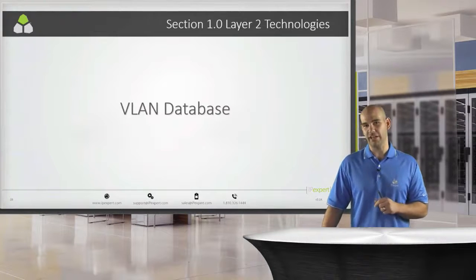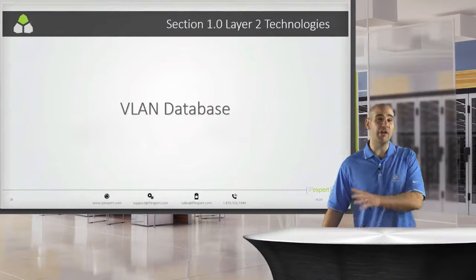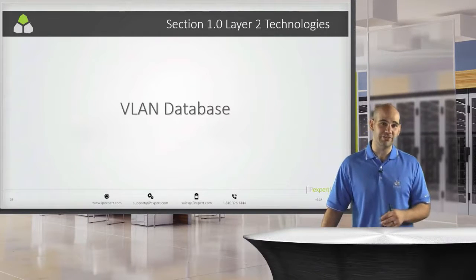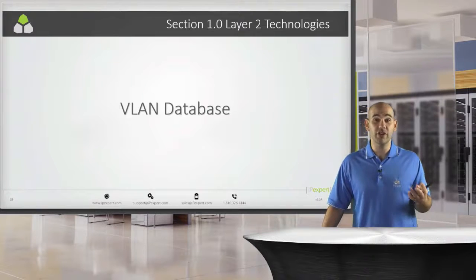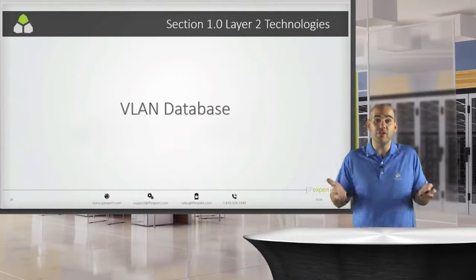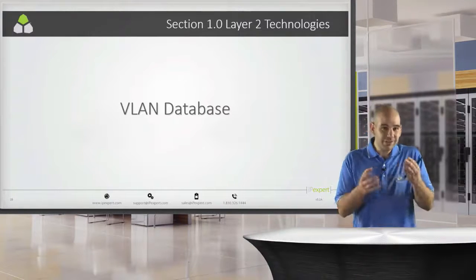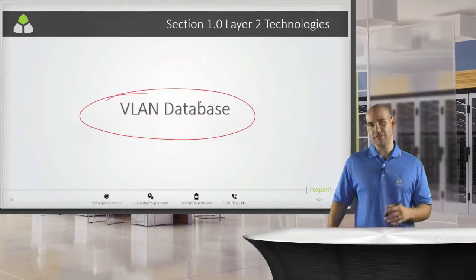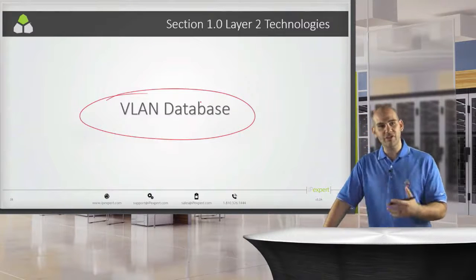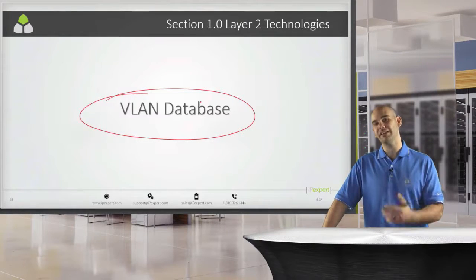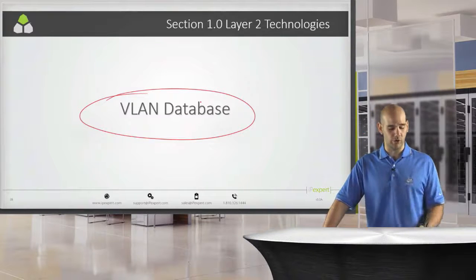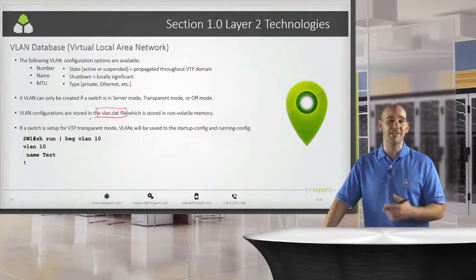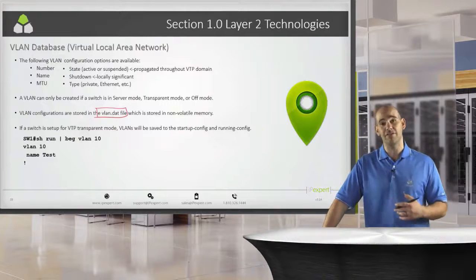Let's take a moment to talk about our VLAN database. We're going to have a video on VLANs — why we need them, how we create them — but once we create a VLAN, where does it go? Where does it live? The answer is our VLAN database. All of our layer 2 switches are going to have this localized VLAN database, and by default the name of that file is going to be the VLAN.dat file.